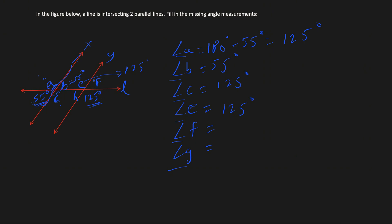By the vertical angle property, if F is 55, then angle H is also 55 degrees. We can also verify using supplementary angles: E is 125, and 125 plus 55 equals 180 degrees. So all eight angles are determined: the 55-degree angles are at positions corresponding to the original 55, and the 125-degree angles fill in the rest.